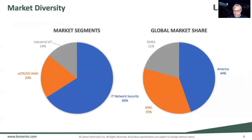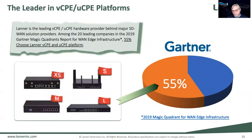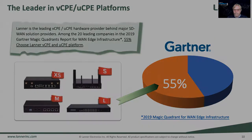Overall, what we see in the market from our revenue is about 20% coming from SD-WAN and universal CPE revenue, while 66% remains for traditional network security, but we see an uptake. The biggest uptake is in the Americas, followed by Asia-Pacific and EMEA. Gartner has identified us in 2019 as covering 55% of the market that chooses LANA appliances for that.